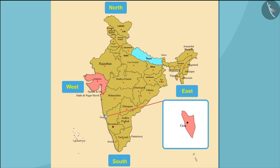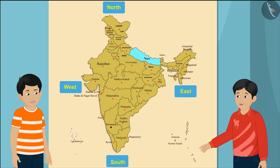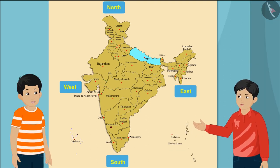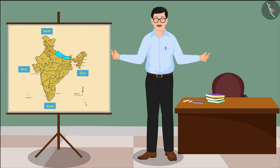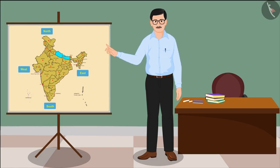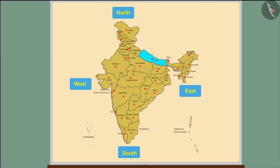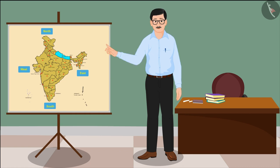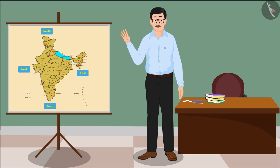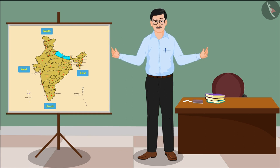So does it mean that the states of Gujarat and Goa lie in the west direction? Yes, Raju, you are absolutely right! So children, you just learned which states lie in the four directions of India. But do you know that there are four additional directions besides these?